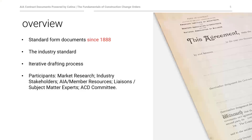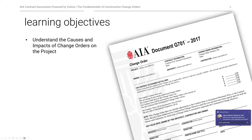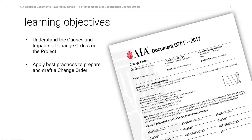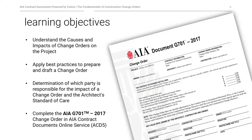This is a very risky business, and change orders are obviously a part of that risk. Our learning objectives today include: understanding the causes and impacts of change orders on your projects; applying best practices when preparing a change order; determining which party is responsible for the impact of that change order, and in particular, our standard of care as architects. Mark will also do a demonstration on completing an AIA G701 change order document.